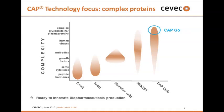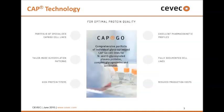Our CAP cells are now positioned to produce the complex glycoproteins and plasma proteins that are otherwise difficult to produce in CHO cells. And with our new portfolio of CAPGO cells and CAPGO cell lines, we are now capable of addressing these molecules very efficiently. The CAPGO system is a portfolio of individual glyco-optimized CAPGO cell lines for N and O glyco-related plasma proteins, complex glycoproteins, and antibodies.